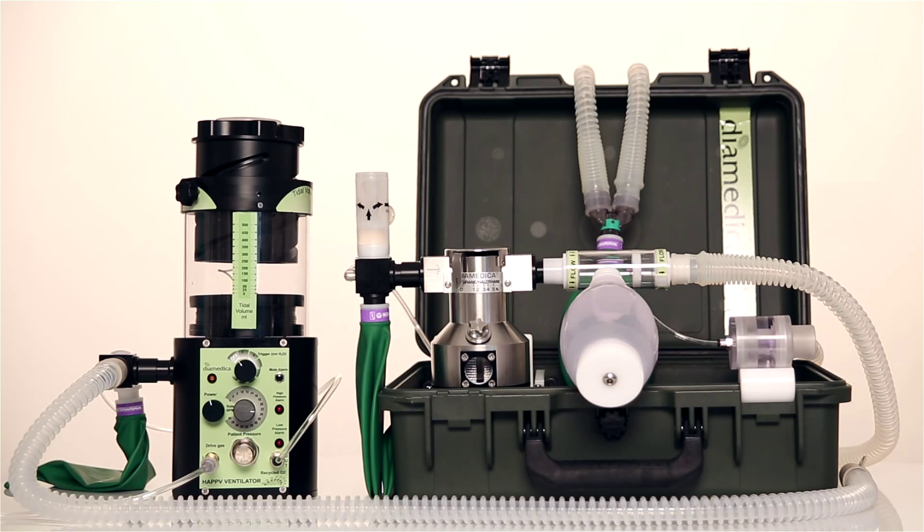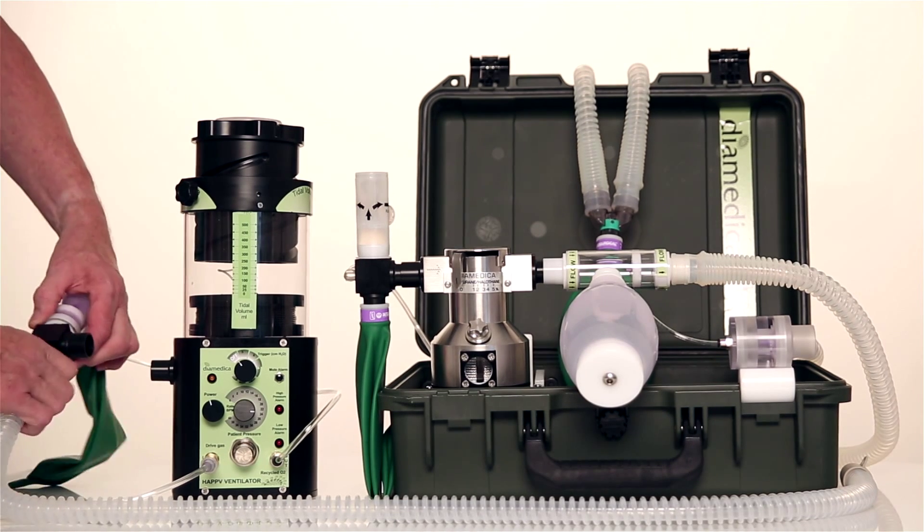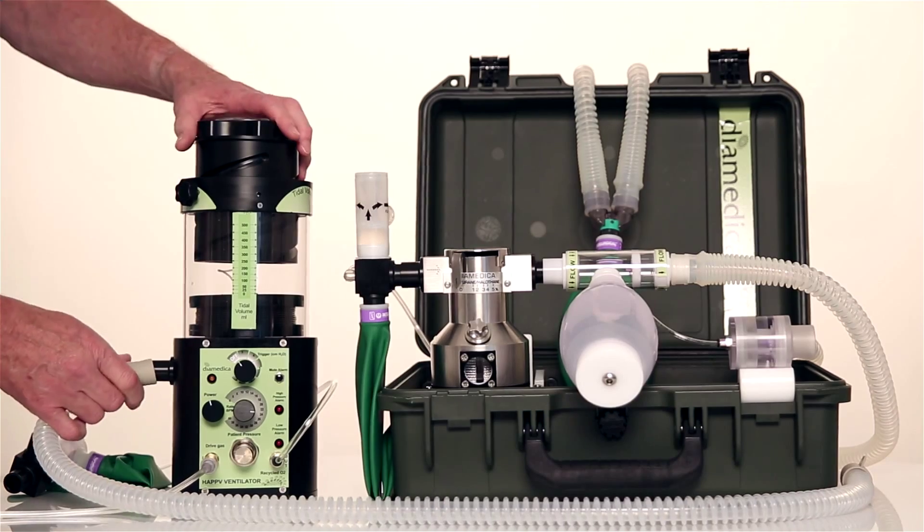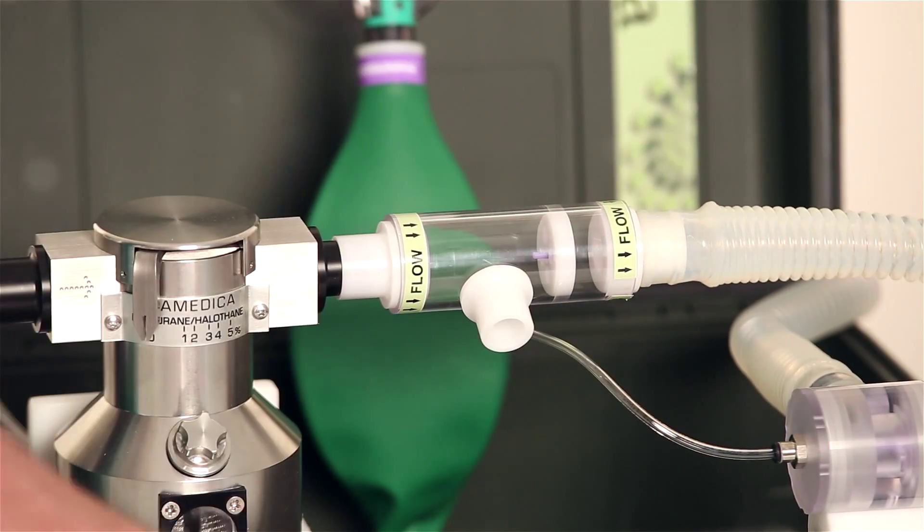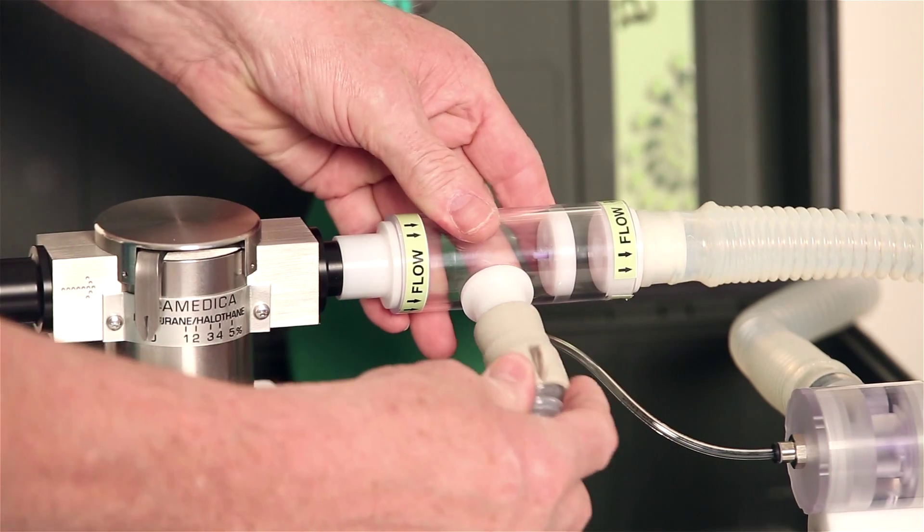If the helix is used with the DPA-02 anesthetic machine, then the circuit block is removed and the ventilator outlet is simply connected to the DPA-inspiratory valve in place of the self-inflating bag.